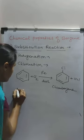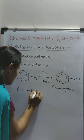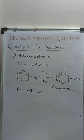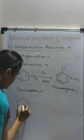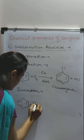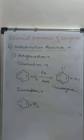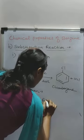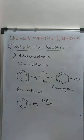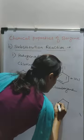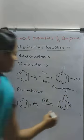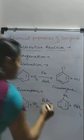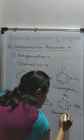Similarly, bromination. Bromination of benzene is similar to chlorination. When benzene reacts with Br2 in the presence of FeBr3 (iron bromide), there is formation of bromobenzene. One hydrogen is replaced by Br and the byproduct is HBr.